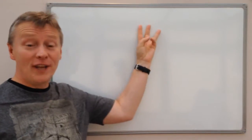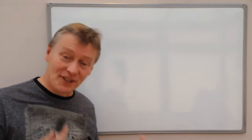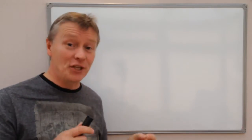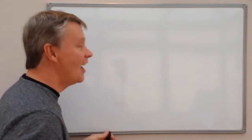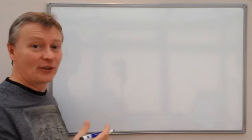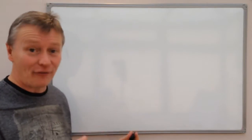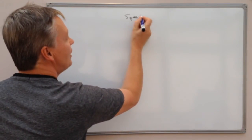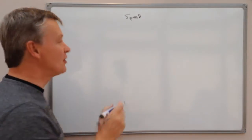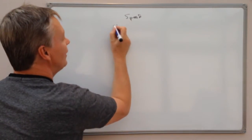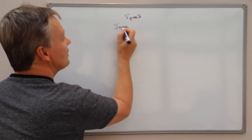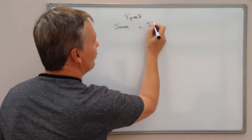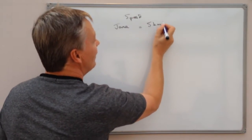Hi and welcome to 3 Minute Maths. In this particular video we're going to talk about converting units, and this particular one deals with a question on average speed. The question relates to Jane, and she walks at a speed of 5 kilometres per hour.